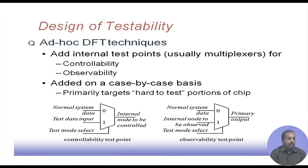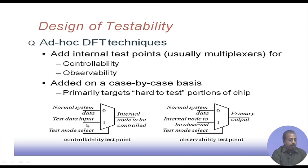The ad hoc technique adds additional internal test points by multiplexers. If a particular point needs to be controlled, a multiplexer is placed before it with a controllability control input. When the control input is 0, normal system data passes through so the circuit operates normally. When we want to put a particular value at that point, a test data input is set and passed through the multiplexer. This way the value at that point can be controlled — controllability is enhanced.